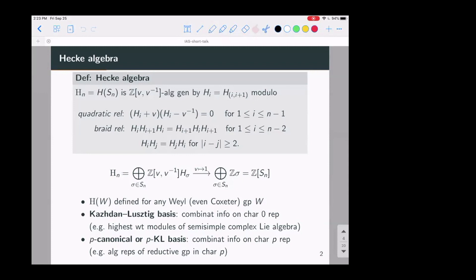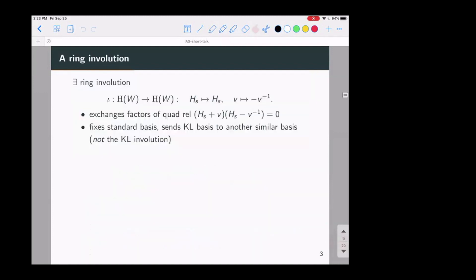But more recently, as Torga told you, there is a p analog of this for positive characteristic p and some p canonical or p Kazhdan-Lusztig basis of the Hecke algebra, again, giving you combinatorial information on now characteristic p representations. So these are things we would really like to understand.